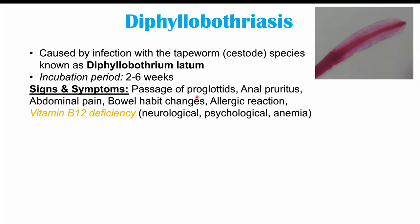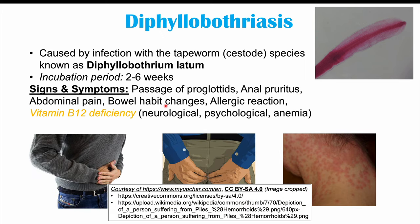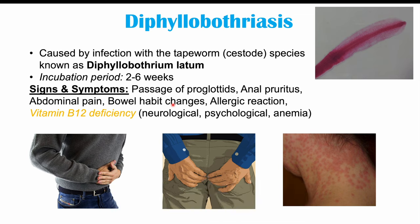Signs and symptoms include passage of proglottids — small pieces of the tapeworm found in the patient's stool that can look like grains of rice. There can also be anal pruritus, abdominal pain, and bowel habit changes such as diarrhea, constipation, or an alternating of the two. An allergic rash may occur as well. Importantly, Diphyllobothrium latum can cause a vitamin B12 deficiency in up to 40% of infected people.